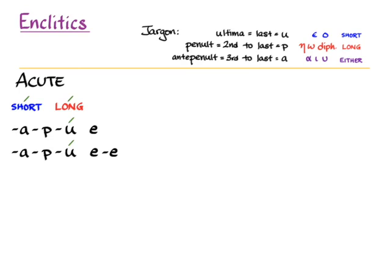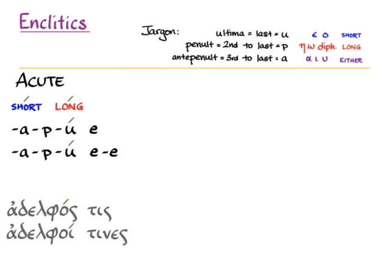If an enclitic follows a word that has an acute on the last syllable, no change happens to that accent. We'll get things like 'adelphos tis' and 'adelphoi tines.' The enclitic does not affect the accent on the previous word at all if that's the pattern of the accent.